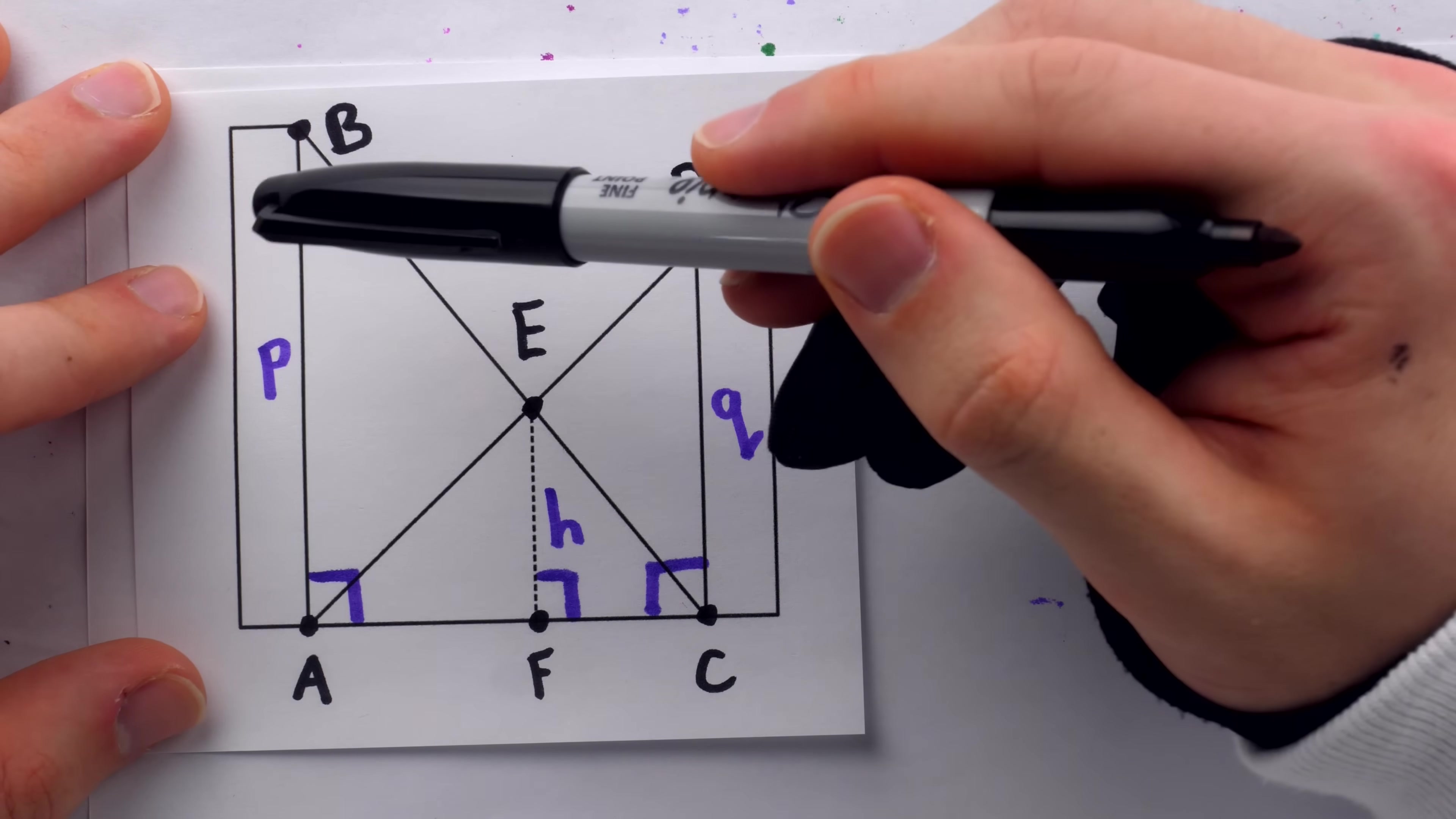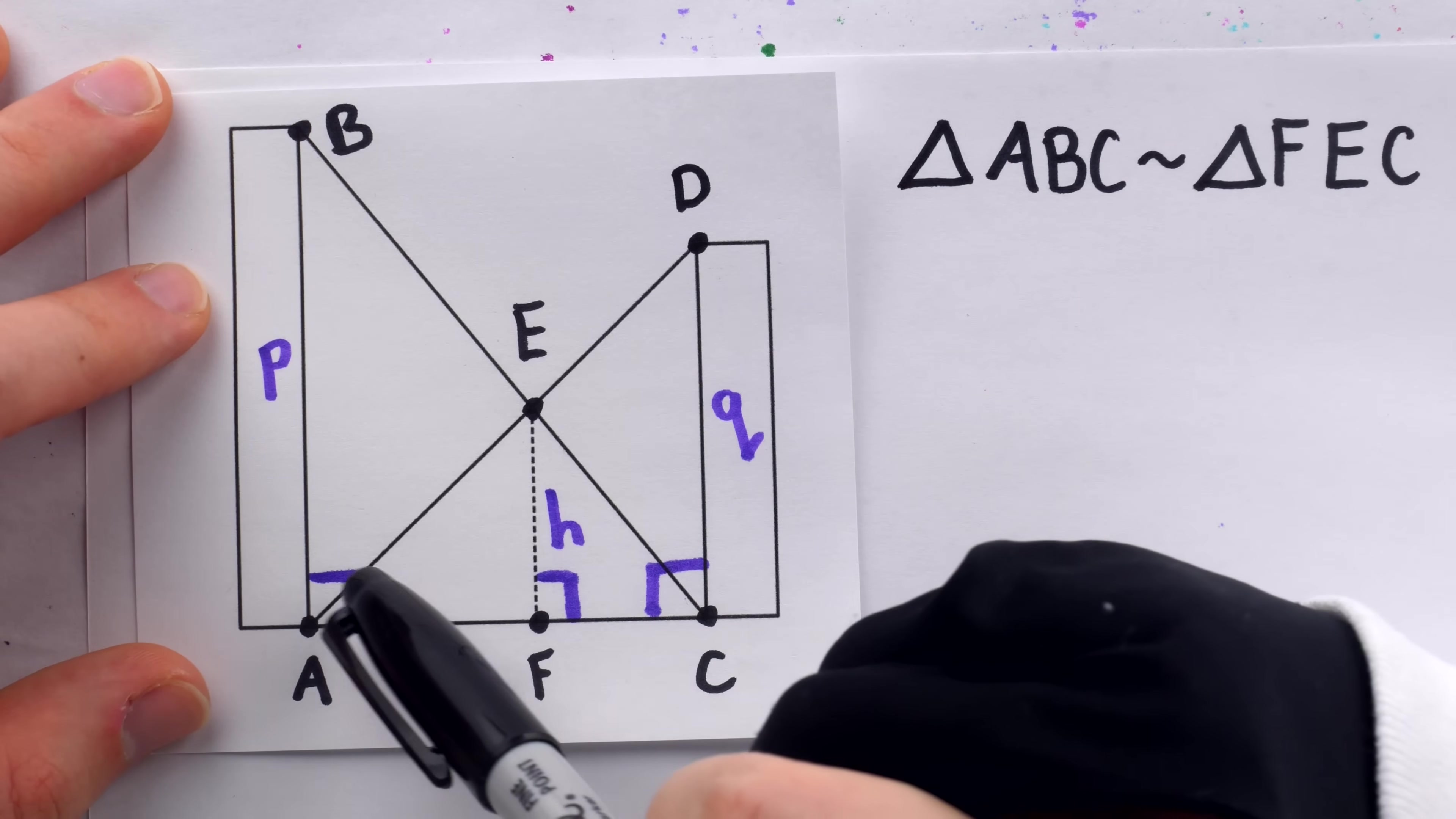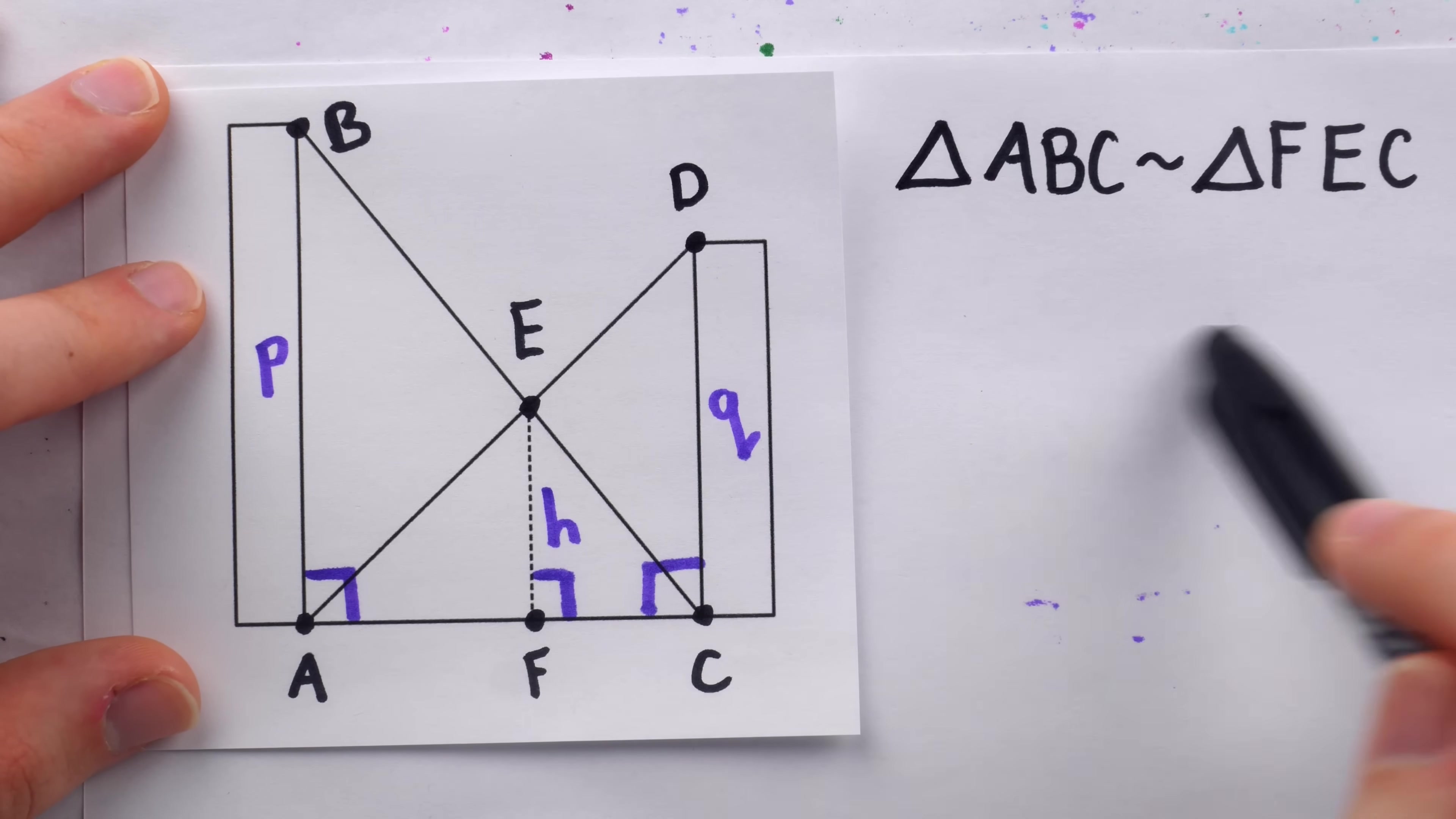The similarity is also easy to justify just by looking at the angles. This angle and this angle have to be the same because they're corresponding angles. We've got parallel lines cut by a transversal. Same thing over here. We have corresponding angles. So those two angles are congruent. Of course, the third angle, which is common to both triangles, is the same, and so indeed, these are similar triangles.